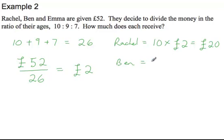Ben, the next oldest, is 9. So he takes home 9 parts. We multiply that by 2 pounds per part. So Ben will get 18 pounds.